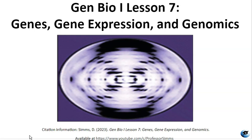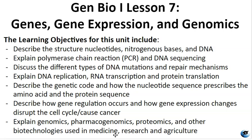The learning objectives for this unit include describing the structure of nucleotides, nitrogenous bases, and DNA. We'll explain PCR and DNA sequencing, talk about different types of DNA mutations and repair mechanisms. I'll explain DNA replication, RNA transcription, and protein translation — aka the central dogma. We'll talk about the genetic code, gene regulation, how changes in gene expression can cause cancer, and finally discuss genomics, pharmacogenomics, proteomics, and other biotechnologies used in medicine, research, and agriculture.